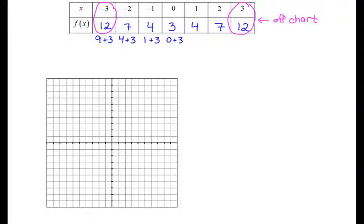That means I'm going to start with the point negative 2, 7, and then go on to negative 1, 4, zero 3, 1, 4, and 2, 7. And I can see that my negative 3, 12 and my 3, 12 would be up here off the chart a little bit. Connecting these points, I see that I again have a parabola that looks an awful lot like the first one, but that this graph is shifted up 3 units.